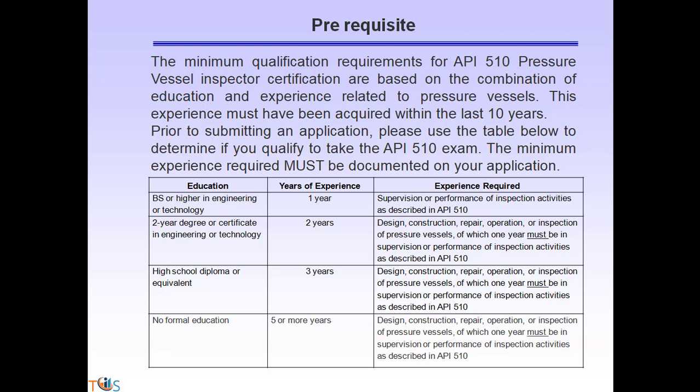The minimum qualification requirement for API 510 is based on a combination of education and experience acquired within the last 10 years. For example, a graduate engineer with one year of experience in supervision or performance of inspection activities on pressure vessels is eligible. A technician with an HND, HNC, or assistant engineer qualification needs two years of experience. A high school diploma requires three years, and no formal education requires five years of experience.